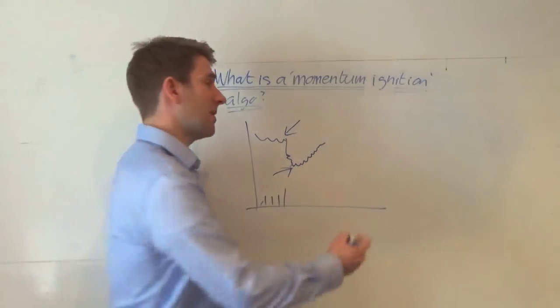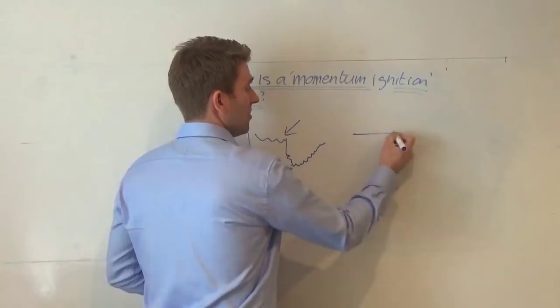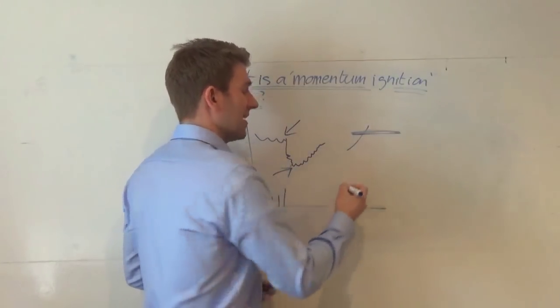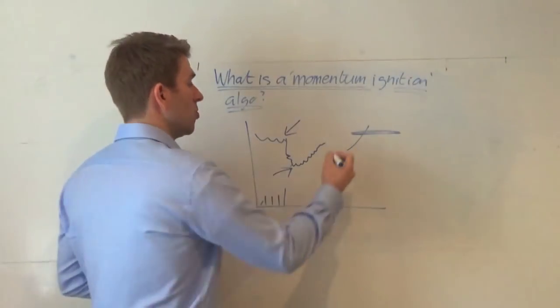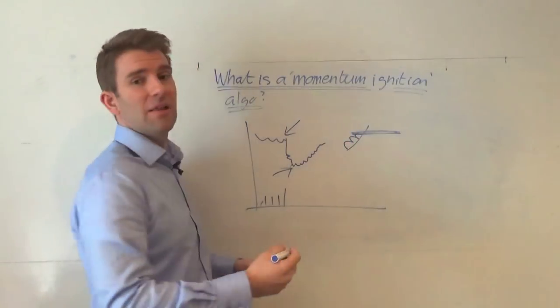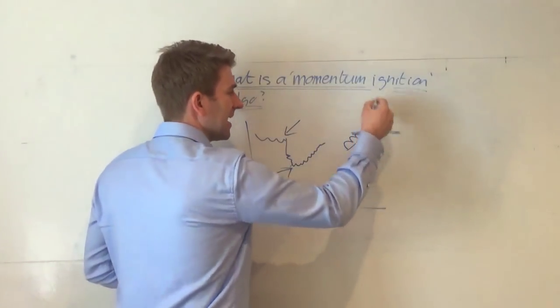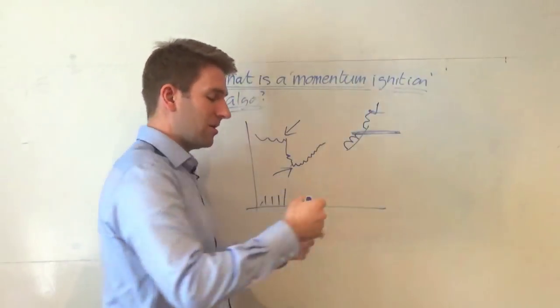And also, like we talked about the stop situation, we often see stop hunting. It's a modern version of that, guys in the pit who would push it knowing there was a sea of stops up there, get the cascade, sell into that, done, walk out of the pit. That was very common. This is like a modern version of that.